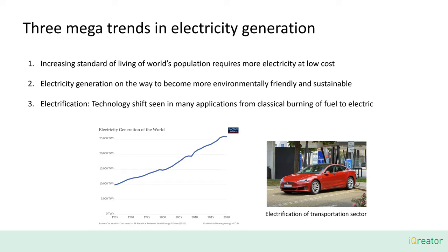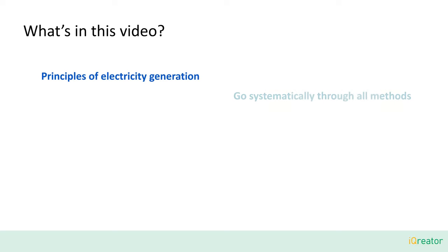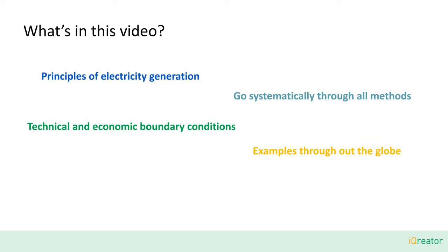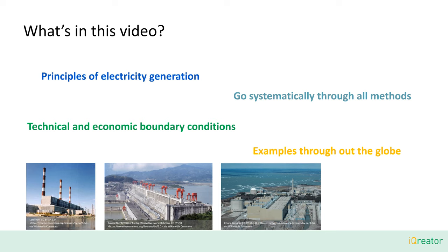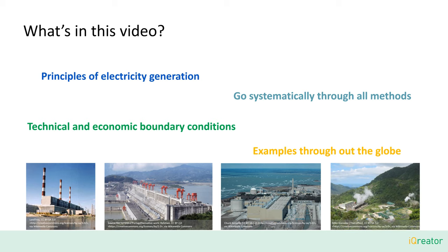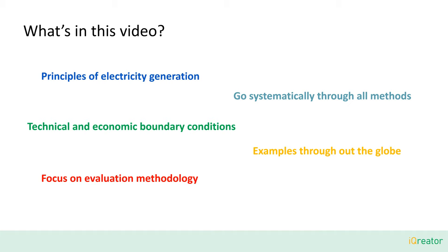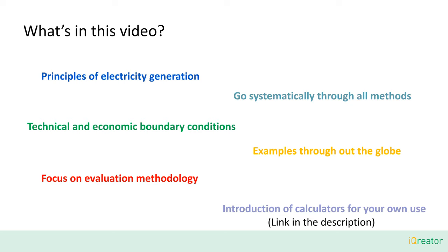Where are we standing today in different parts of the world and how can these trends be fulfilled in the future? In this video, we want to look systematically at the principles of electricity generation. We will go through all different methods and look at their technical and economic boundary conditions. We will check out examples of power plants and electricity companies all over the world. Which one do you think has the lowest production cost and why? Natural gas power plants in Russia? Hydro power in China? Nuclear power in Canada? Or maybe geothermal power in the Philippines? As this field is highly dynamic and the situation is very much different in different parts of the world, we want to especially focus on the evaluation methodology and provide you with some simple calculators for your own use. They certainly are not detailed enough for your next investment decision into a power plant, but they will help you to further study the fascinating field of electricity generation and put whatever you watch or read as announcements into perspective.